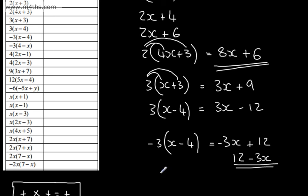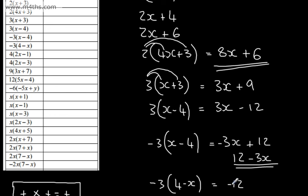Let's look at the next one. We've got negative 3, then we have 4 minus x. Well, I know that 3 times by 4 is 12. This time though, we have a negative and a positive, so that's going to be negative 12. 3 multiplied by x is going to give me 3x. We have one negative here, another negative there — two negatives multiplied to give a positive, so I'm going to add those terms. So, negative 12 plus 3x.